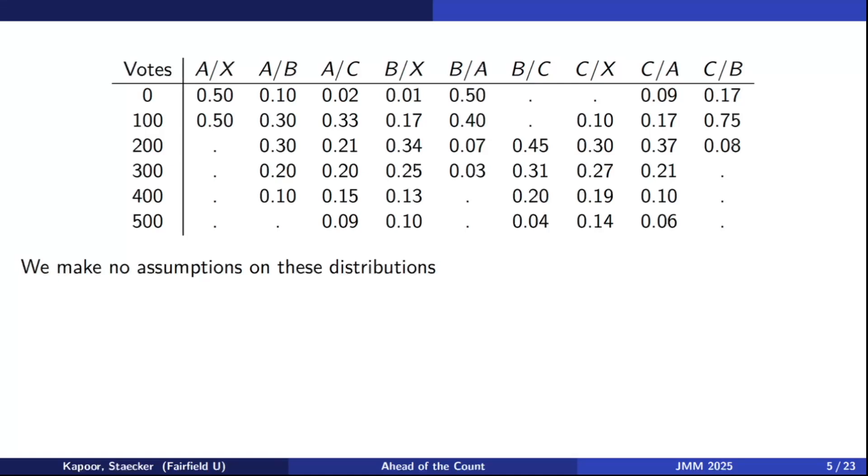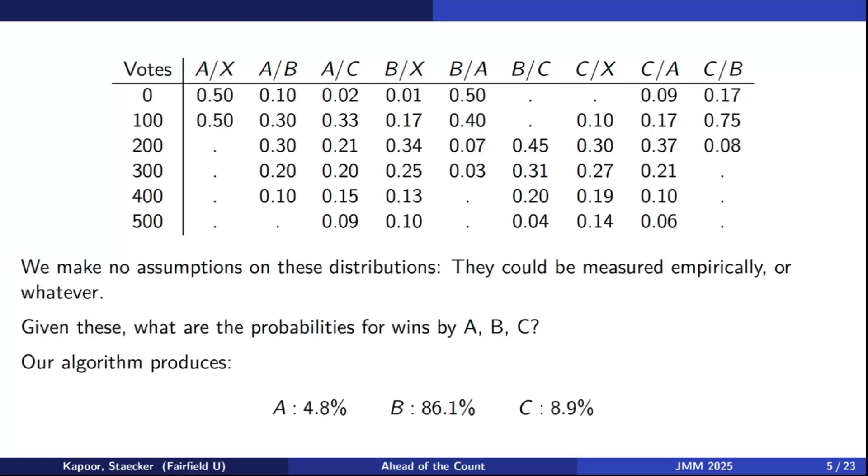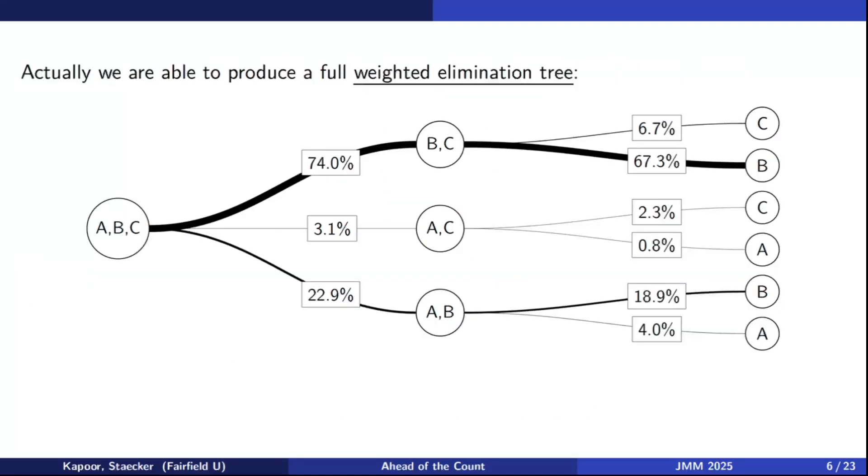These are probability distributions describing how we expect the votes to be cast, but we're not making any assumptions on what these distributions are. In real life, it might be natural to assume that they're normal distributions and you can use normal distributions if you want, but we are not assuming anything about these distributions. They could be measured empirically if you want to do polling or whatever you like. The big question is given all of these probabilities, can you tell me how likely is it for A, B, or C to win the election? And a little spoiler alert, here's what happens. We do have an algorithm that can make this calculation.